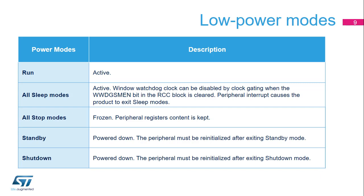The window watchdog is active when the device is in run or sleep modes. It is not available in stop or standby modes. In sleep mode, the window watchdog clock can be disabled by clearing the corresponding low-power enable bit located in the RCC block.